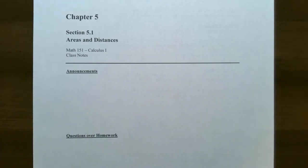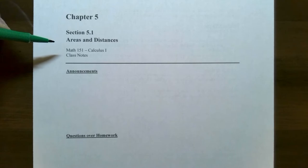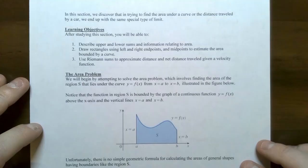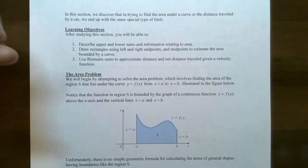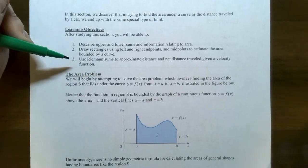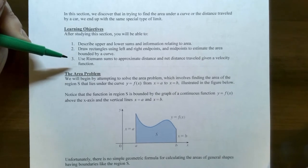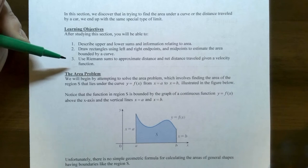Hey everyone, it's Professor Pemberton. In this video we're going to finish up our discussion on the area problem but also related to distances. We left off at finding Riemann sums to approximate the distance and also net distance traveled given the velocity function of an object.